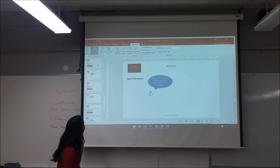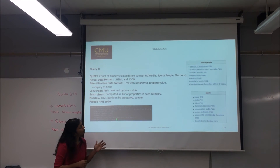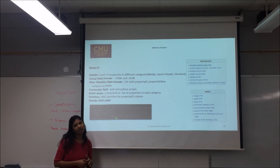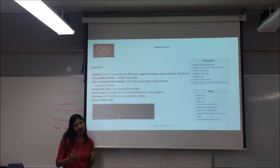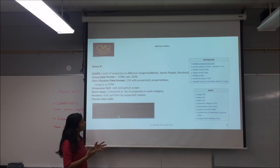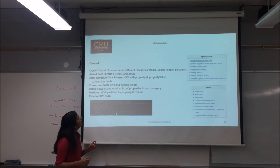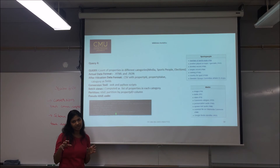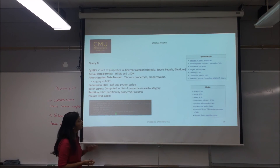Coming to the fourth query, it gives the count of properties in different categories — media, sports, people, and elections. Wikidata has already provided a summary table consisting of the category and its respective properties and values. We would convert the HTML file into a CSV file with the respective property ID, its value, and the category it belongs to. We would check the occurrence of each property in the different JSON dumps, and the number of occurrences would be summed up to give the count of properties for different categories.